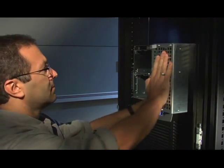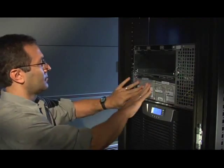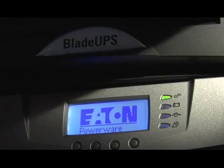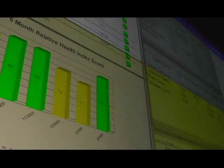The PowerWare BladeUPS fits in any standard rack or cabinet that has space available. It has the smallest footprint of any UPS in its class, with twice the power density of comparable systems.